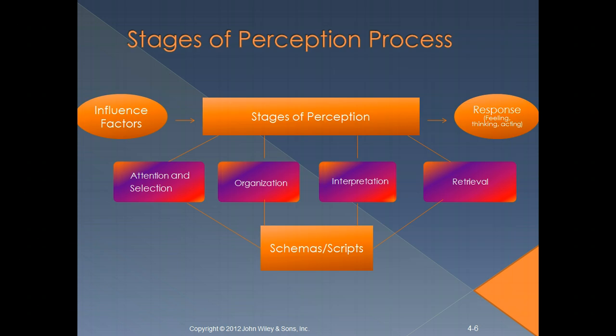If we put a flowchart to the stages of perception, this would be a basic outline of influence factors and the stages: attention, selection, organization, interpretation, retrieval, scripts or schemas, and then response — your feelings, your thinking, acting upon this information. This is a basic template, but we're going to break this down in more individual slides as we move through it.